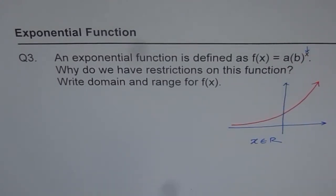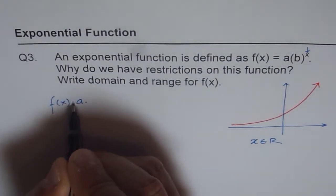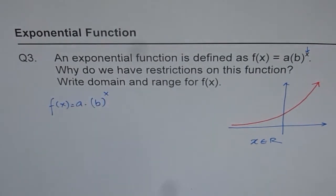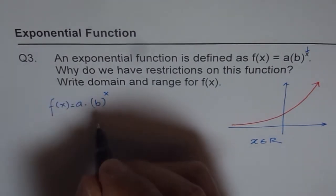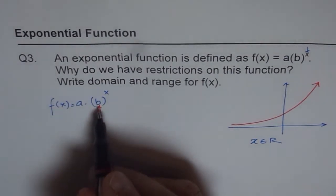But we do have some restrictions on f of x equals a times b to the power of x. And those restrictions are basically on the base b itself. Base b is restricted for us. So what are the restrictions on base b?